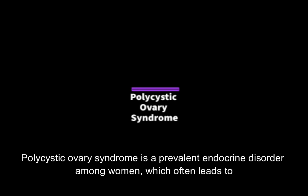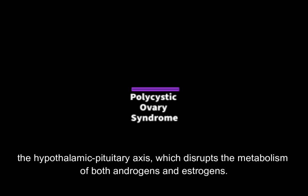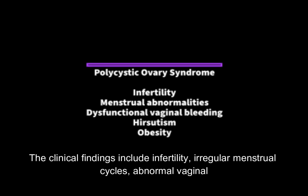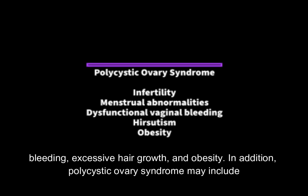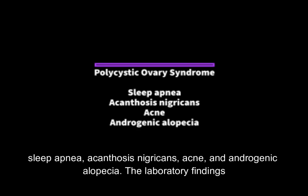Polycystic ovary syndrome is a prevalent endocrine disorder among women, which often leads to secondary amenorrhea, hirsutism, and obesity. The syndrome occurs due to dysfunction of the hypothalamic-pituitary axis, which disrupts the metabolism of both androgens and estrogens. The ovaries become thickened and sclerotic and develop multiple peripherally located follicles. Clinical findings include infertility, irregular menstrual cycles, abnormal vaginal bleeding, excessive hair growth, and obesity. Additional findings include sleep apnea, acanthosis nigricans, acne, and androgenic alopecia.